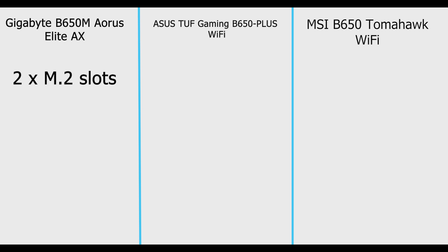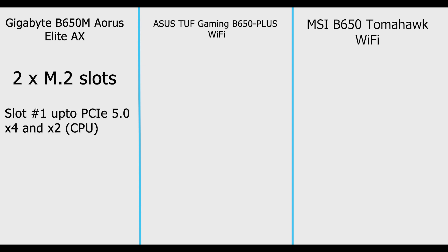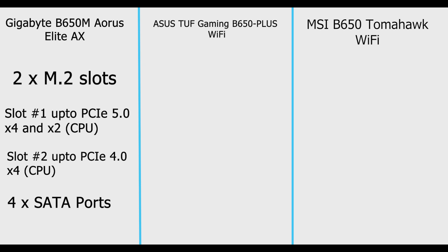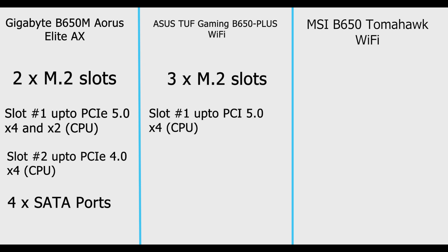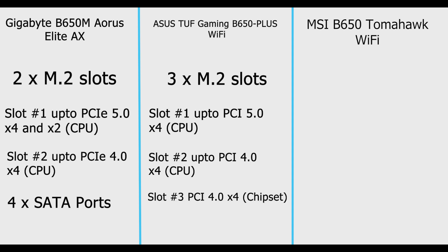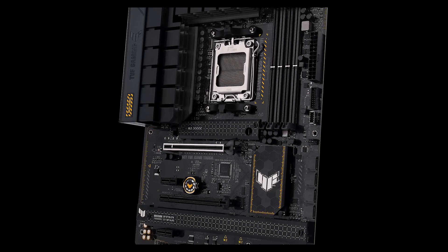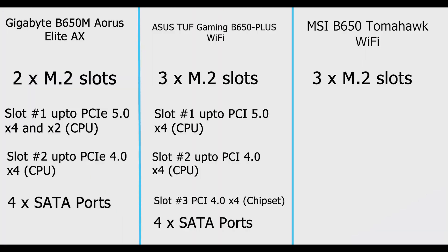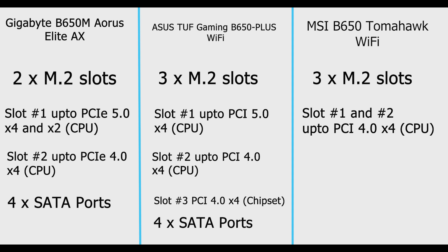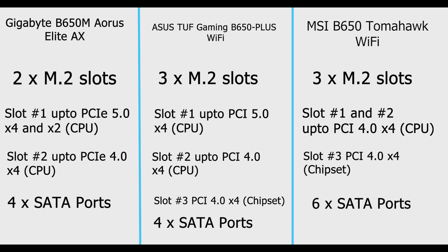For storage, Gigabyte offers two M.2 slots: the first supports up to PCIe 5.0 x4 from CPU, and the second supports up to PCIe 4.0 x4 from CPU, along with four SATA ports. ASUS has three M.2 slots: slot one supports PCIe 5.0 x4 from CPU, slot two supports PCIe 4.0 x4 from CPU, and slot three supports PCIe 4.0 x4 from chipset — note that using M.2 slot three suspends the second PCIe x16 slot. MSI has three M.2 slots: slots one and two support PCIe 4.0 x4 from CPU, and slot three supports PCIe 4.0 x4 from chipset, plus six SATA ports.